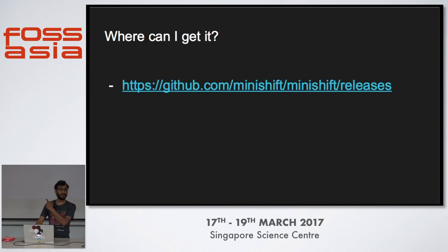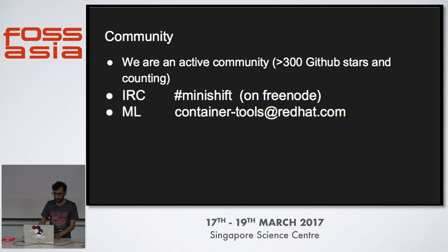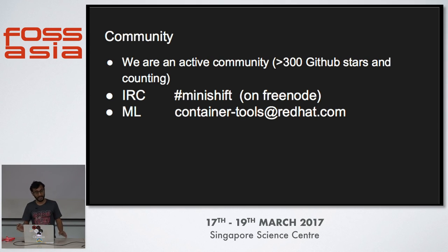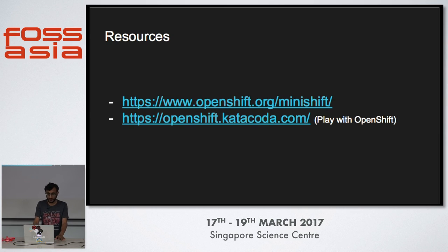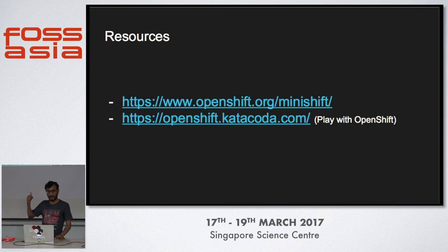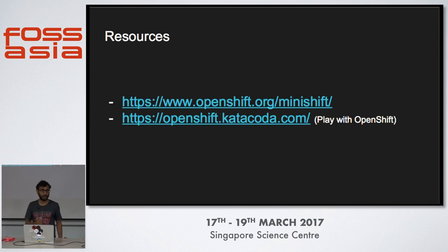Where can you get it? This is the GitHub URL - go to releases, download the binary, start it. The community is very active - we're closing in on 300 stars, not that big but we're still counting and working towards it. We have a Freenode channel on IRC, still not on Slack but it works fine. Mailing list: container-tools at Red Hat in the mailing list right now - it's a public mailing list, you can join and ask questions. We have a documentation page at openshift.org/minishift, and the current examples from the demo I showed you are on katacoda.com/openshift, where you can run through it and see how OpenShift actually works.